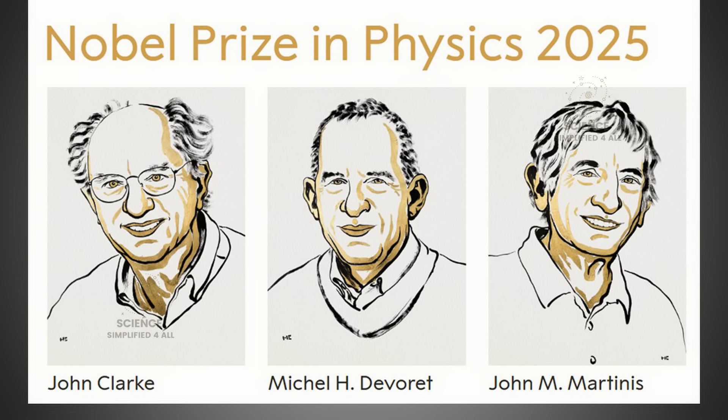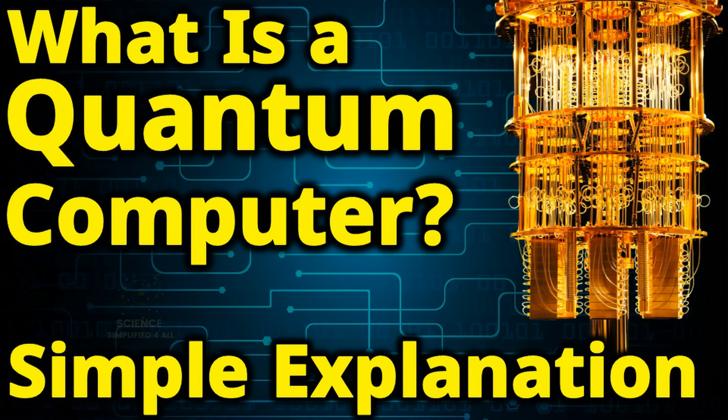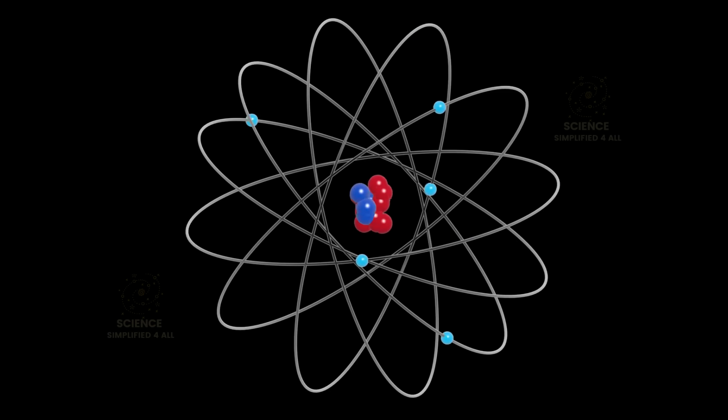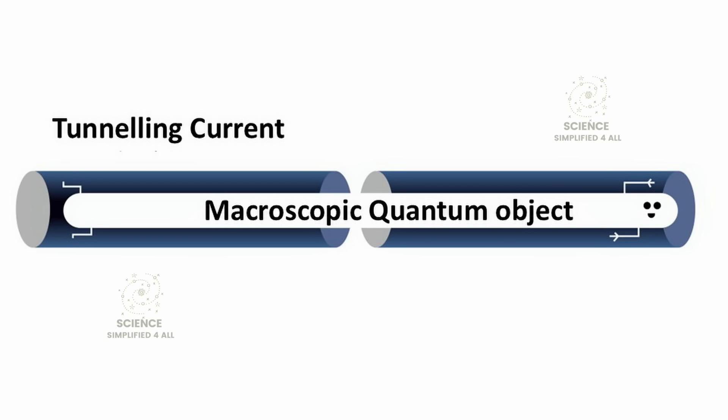But this discovery also had another remarkable outcome. As we discussed in the earlier video on quantum computing, the fundamental building block of a quantum computer is the quantum bit or qubit. To be used as a qubit, a material must exhibit quantum properties. In theory, one could use individual quantum particles, such as electrons, as qubits. But handling and measuring such single particles is extremely difficult. However, by using the macroscopic superconducting currents discovered by these scientists, currents that already behave quantum mechanically, qubits can be created that are much easier to control and measure.